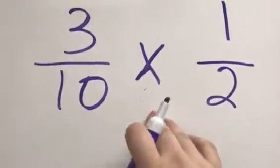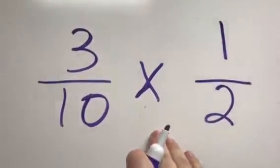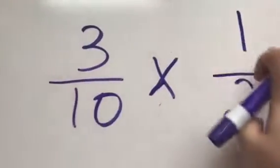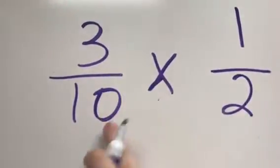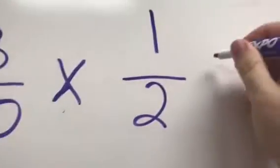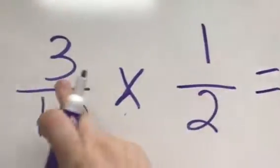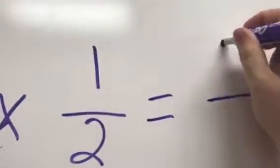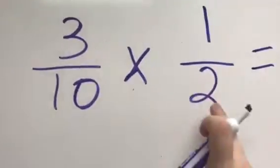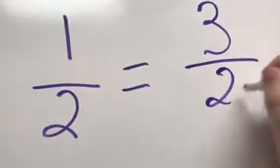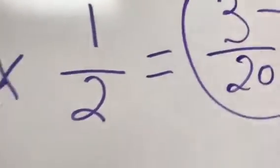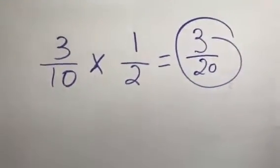But multiplying fractions is actually the easiest to do because all you do is multiply straight across the top and then multiply straight across the bottom, and you'll get your answer. So 3 times 1 is 3, 10 times 2 is 20, and that's my answer. That's all you have to do when you're multiplying fractions.